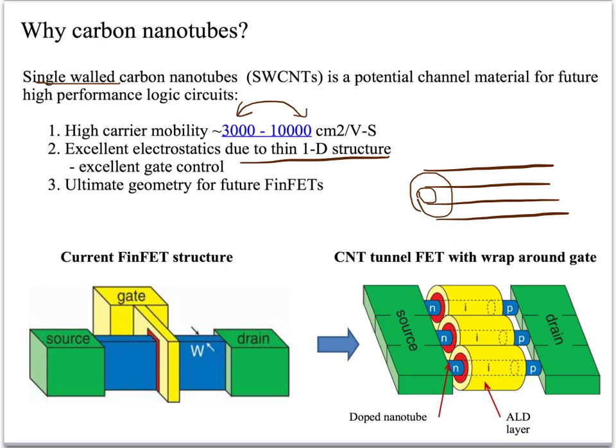We are moving towards gate wraparound structures because we need better gate control in scaled transistors. If carbon nanotubes have diameters ranging from 0.5 nanometers to 5 nanometers, which is the theoretical estimation, then it is obviously a preferable material for future nanoelectronics, because that provides a lot of room for scaling and continuation of Moore's law.